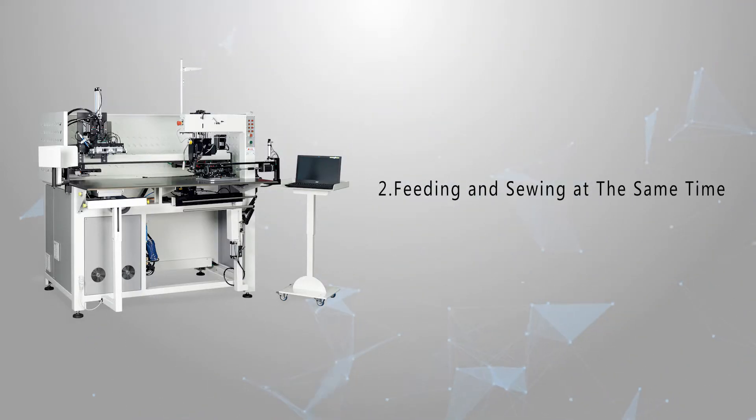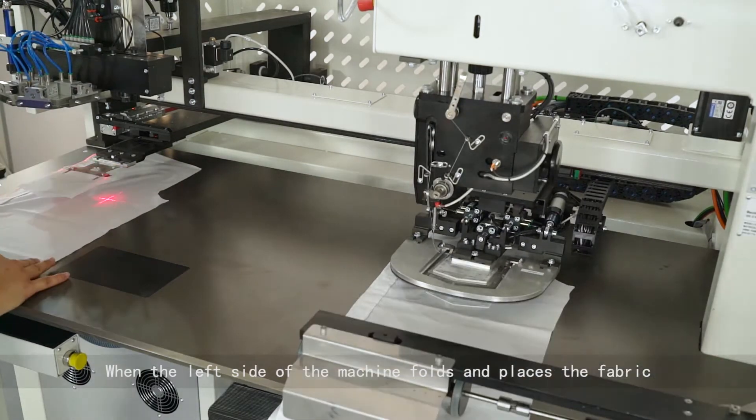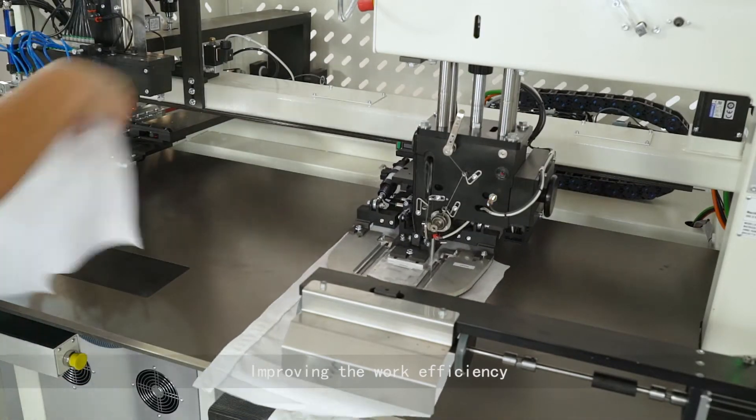Feeding and sewing at the same time. When the left side of the machine folds and places the fabric, the right side is sewing. No need to wait to sew, improving the work efficiency.